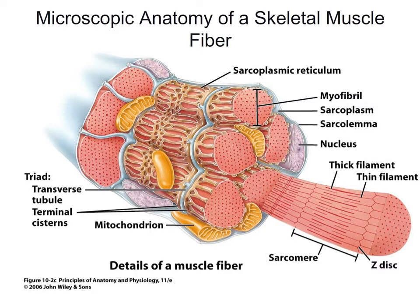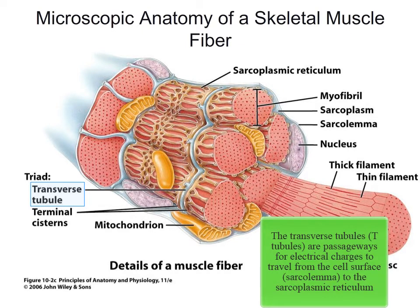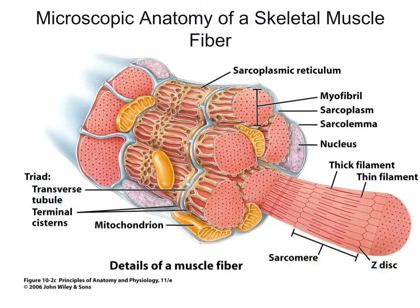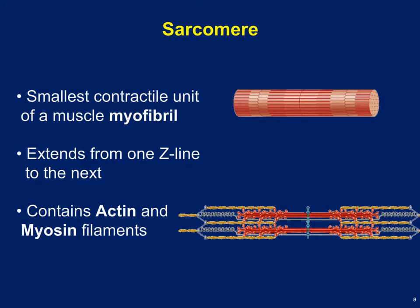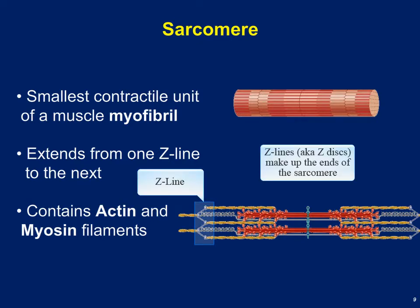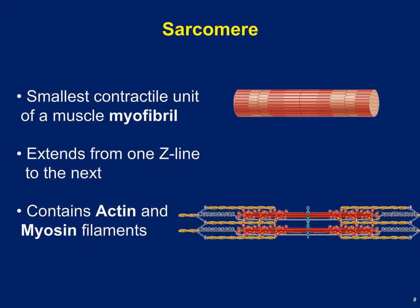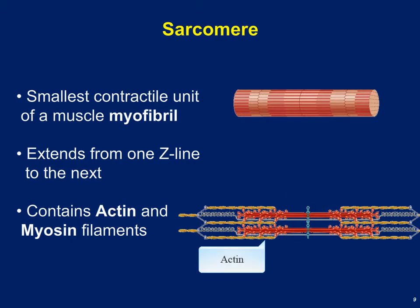The T-tubule is a passageway from the cell surface — the sarcolemma — deep into the cell interior where the myofibrils are. Its job is to transmit electrical charge from the outside of the cell deep into the cell to signal muscle contraction. Within the sarcomere, which extends from one Z-line to the next, we find two main types of protein: myosin — the thick red protein with golf club-like heads — and actin — the thin orange proteins attached to the sides of the Z-lines.